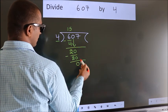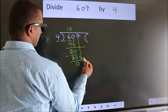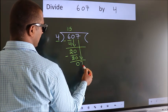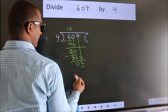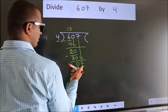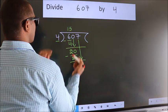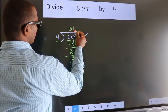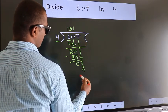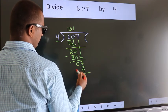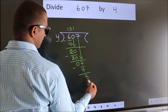After this, bring down the beside number. So 7 comes down, giving us 7. A number close to 7 in the 4 times table is 4 ones, which is 4. Now we subtract and we get 3.